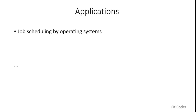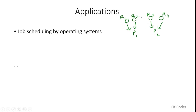Now let's look at applications of topological sort. One of the most important applications is in operating systems for job scheduling. For example, programs P1 and P2 may depend on a number of resources such as a printer, mouse, keyboard, or other hardware. The operating system can schedule a program only when all its required resources are met. It uses topological sort to check when all dependencies of a program are satisfied before executing it.